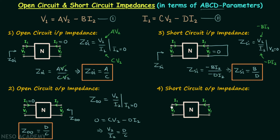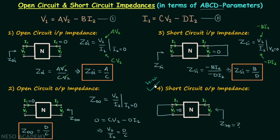Now moving on to the final impedance, which is the short circuit output impedance. We will short circuit the input port, therefore V1 will be 0, and we will find out the output impedance. I will represent this impedance by Z sub SO. Finding out Z sub SO is the homework problem for you — once you have your answer, post it in the comment section. I will end this lecture here; see you in the next one.